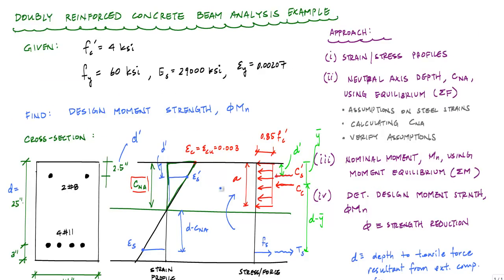This MN is being represented on the left side of the section line, this vertical line. If I take moments about any point, I can solve for MN. In this case, I'll take moments about the compression force resultant, which is right here.